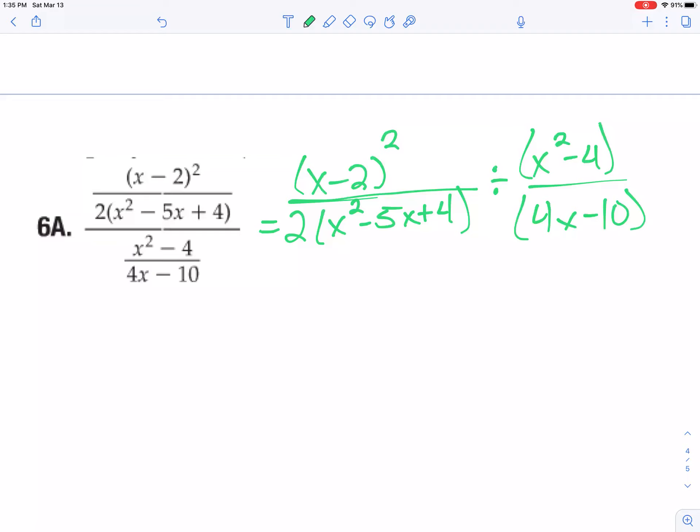Go ahead and flip that second fraction to show it as multiplication. So now I have parenthesis x minus 2 quantity squared over 2 parenthesis x squared minus 5x plus 4 times 4x minus 10 over x squared minus 4 – see how I just flipped those? Now you can solve the same.